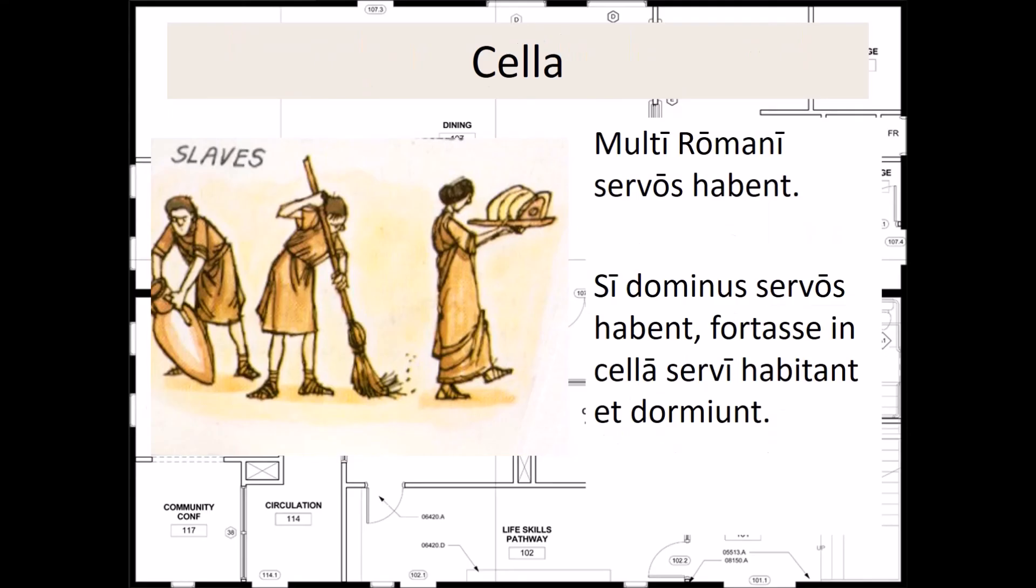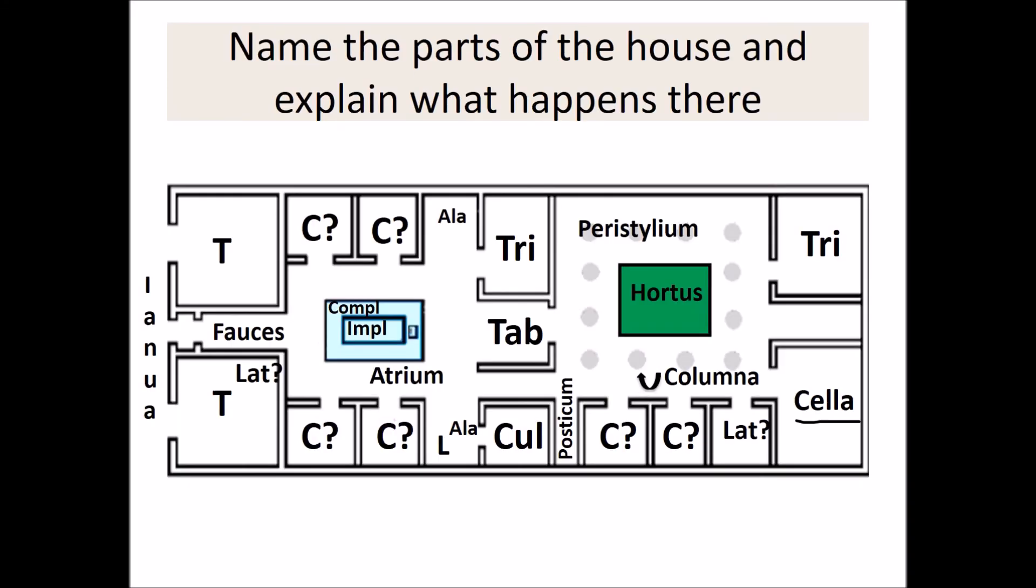The last room that we have in a typical Roman domus is the cella. Multi Romani servos habent. Si dominus servos habet, fortasse in cella servi habitant et dormiunt. The cella is the last room in a typical Roman house, and it is usually located in the very back of the domus to keep the servants and slaves away from the family's normal daily actions. And it is in the cella that these slaves would spend the majority of their time when they weren't working, here spending time with their friends and families, and especially sleeping. And as such, the cella is usually translated to the servant's quarters.